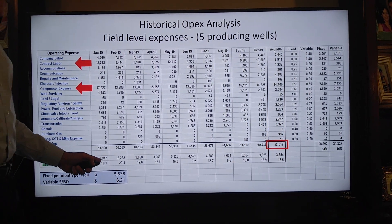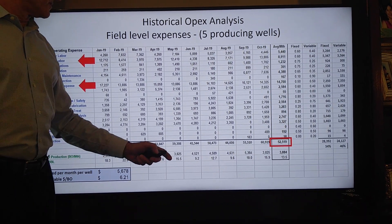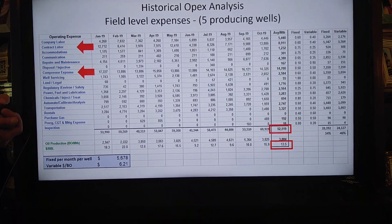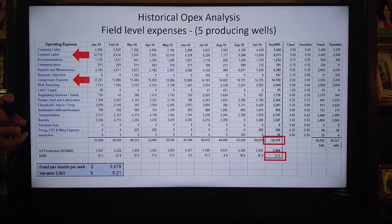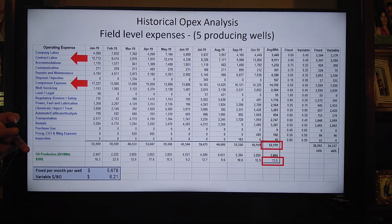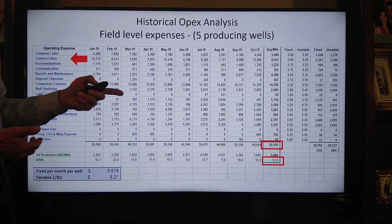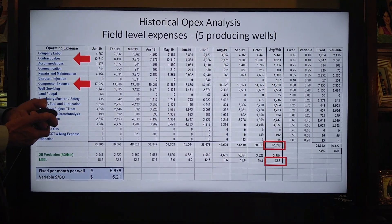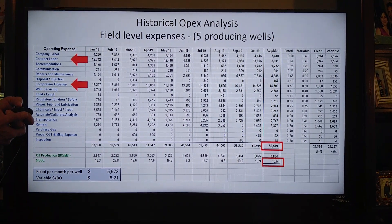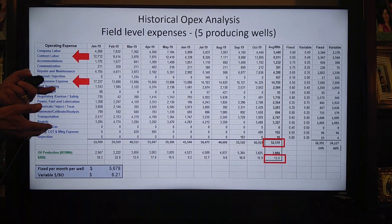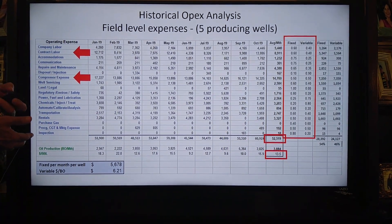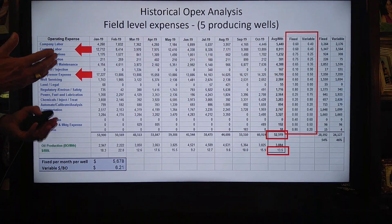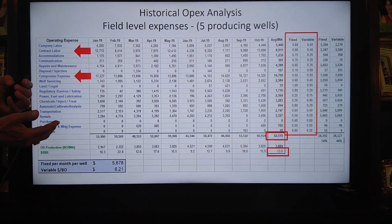But if we look at the amount of oil produced each month, we can calculate how much expense per barrel. In this case, it's $13.50 per barrel, which would be a variable way of projecting expenses. Either method on its own might not be perfect, and sometimes we want to use a combination of partially fixed and partially variable.